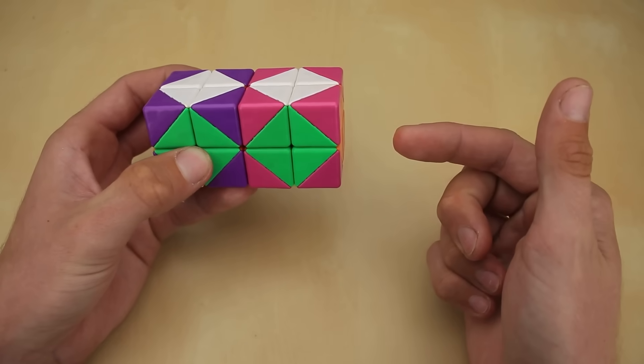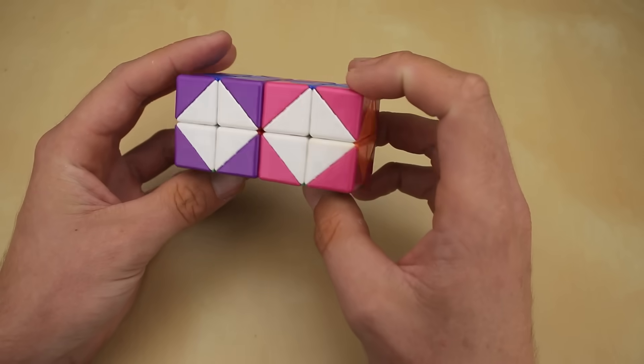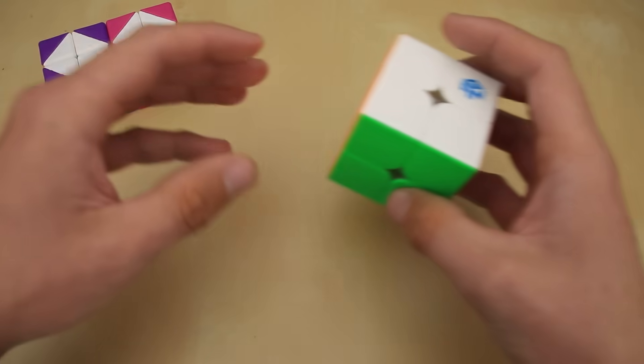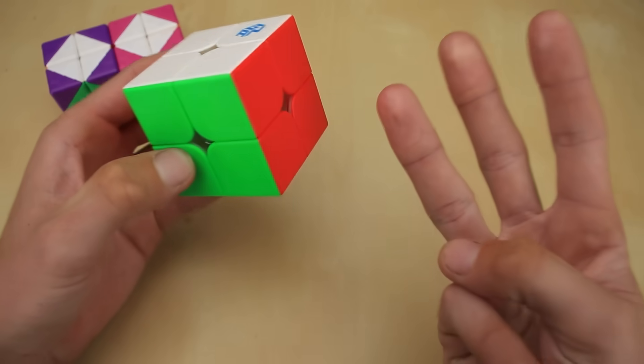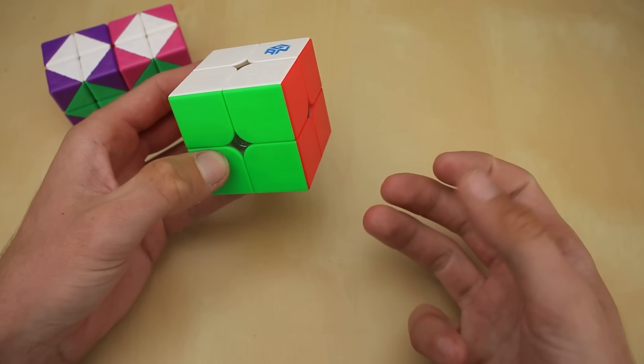And speaking of, how does this thing turn, and what does it even mean for it to be four-dimensional in the first place? Well, what does it mean for a standard 2x2x2 to be three-dimensional? Well, it means that it has three axes.